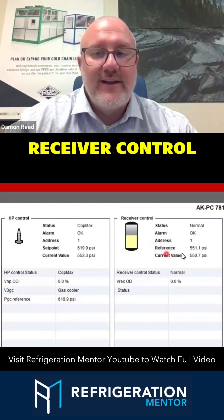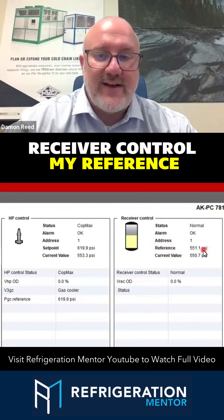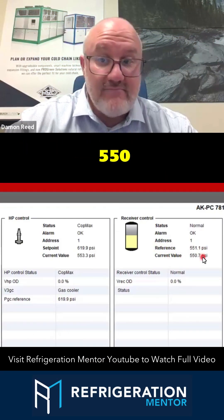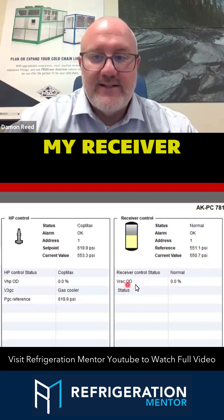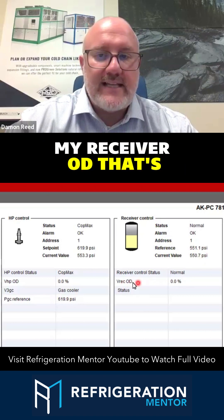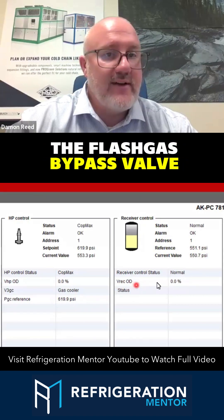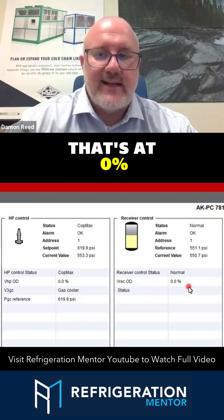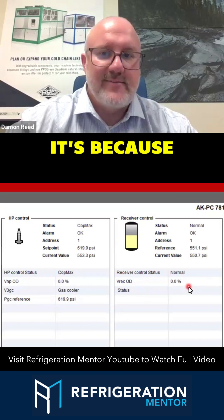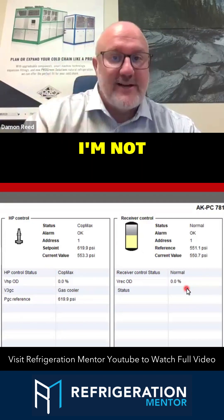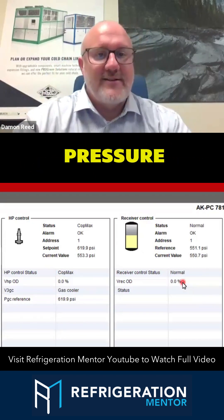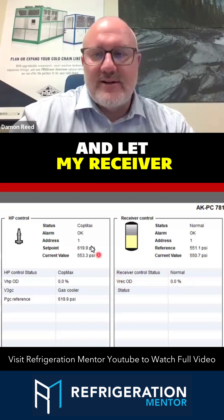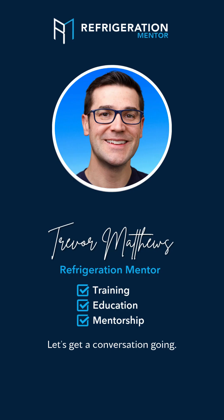Receiver control: my reference is 550 and my current value is 550. My receiver output — that's the flash gas bypass valve output — is at 0%. That's because my receiver is at set point. I'm not generating any excess pressure, so I'm not asking it to open up and let the receiver pressure come down.